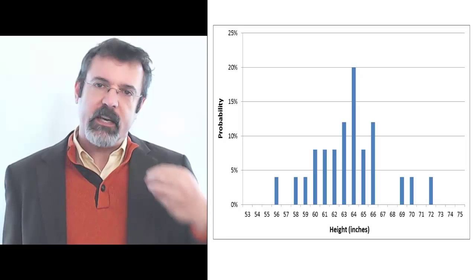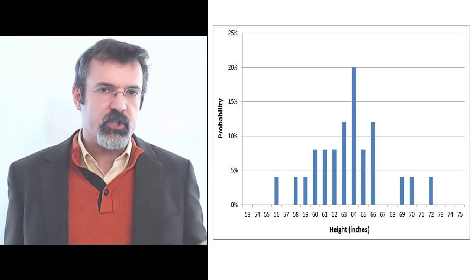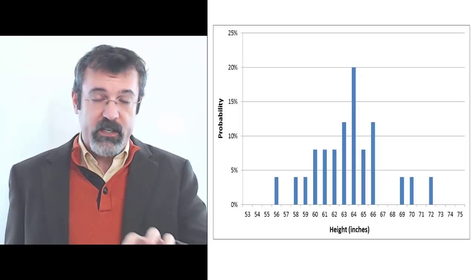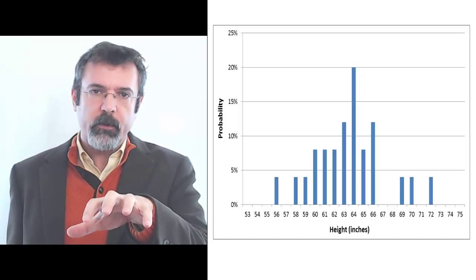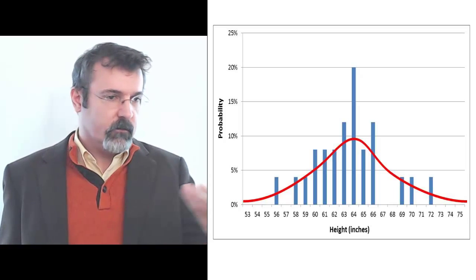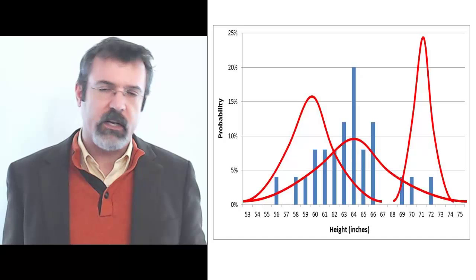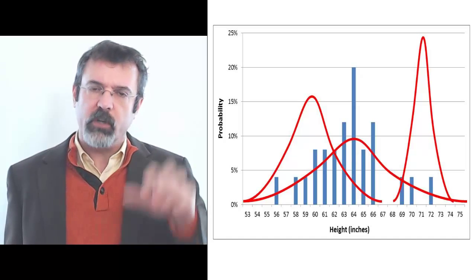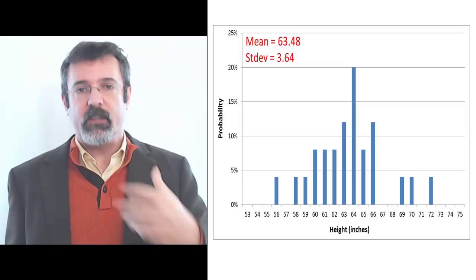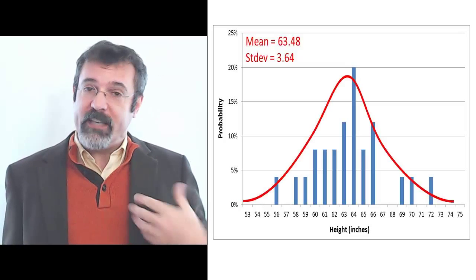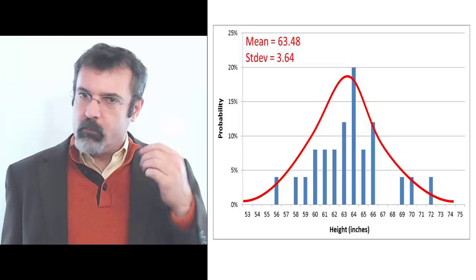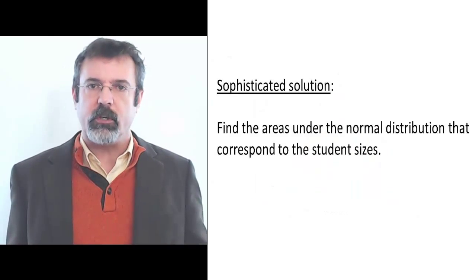We can improve our estimate by taking account of another piece of information: the heights of college students are normally distributed. Knowing this, we can take our sample and overlay on top of it a normal distribution. The normal distribution we want to overlay is the one that has the same mean and the same standard deviation as our sample. When we find this normal distribution, we have a more sophisticated approach — using the normal distribution instead of the sample directly.